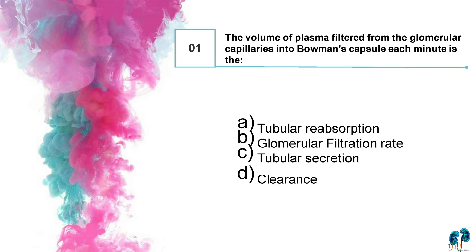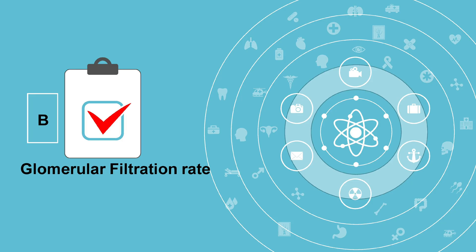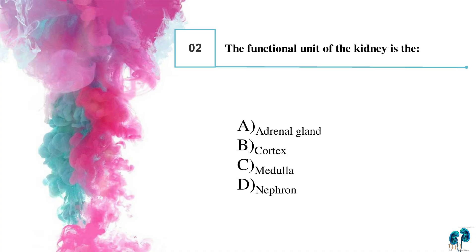Here is an exam tip: in physiology, anything we are comparing with time is called a rate. In this question, only one option contains the word 'rate,' so the right answer is option B, glomerular filtration rate.